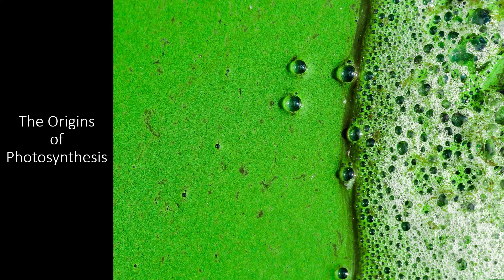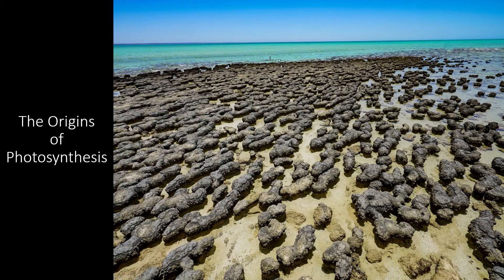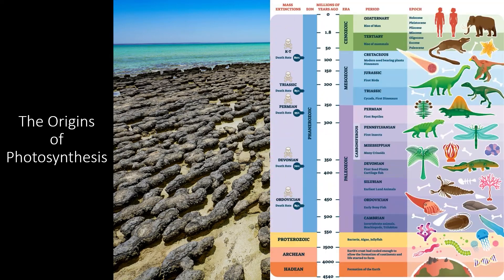As these cells multiplied and spread throughout the world's oceans, the massive amount of photosynthesis taking place added huge amounts of oxygen to the Earth's early atmosphere. By analyzing rocks, fossils, and other sources of ancient information, scientists estimate that the early atmosphere became highly oxygenated around 2.3 billion years ago.